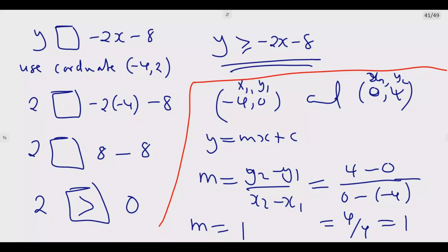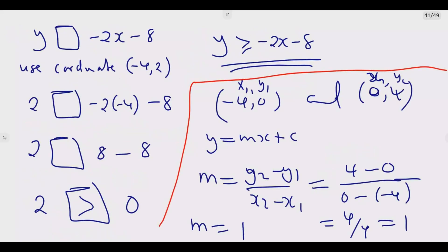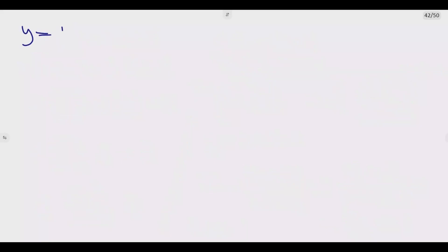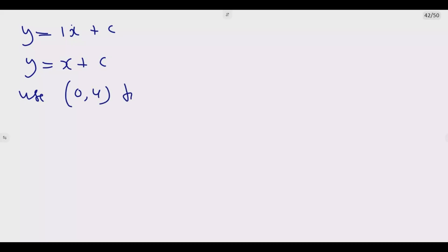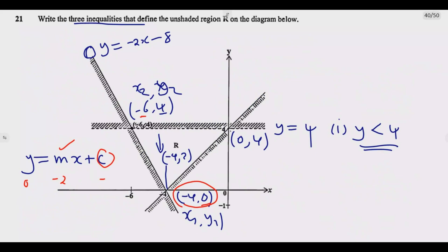Having found m = 1, I now find c. Using the point (0, 4): y = x + c gives 4 = 0 + c, so c = 4. Therefore the equation of this line is y = x + 4.